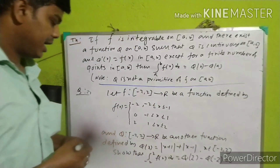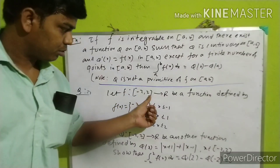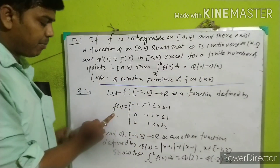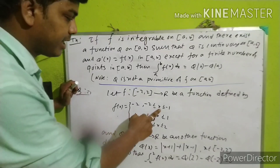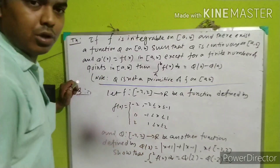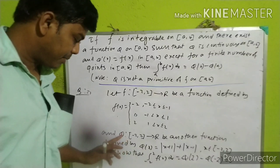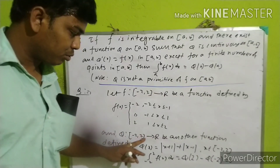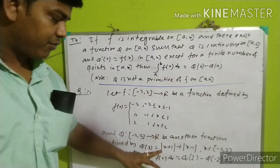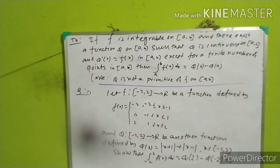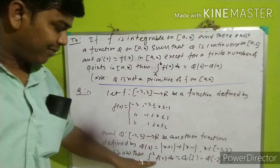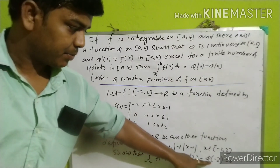Here the question is: a function f such that minus 2 to 2, f from [-2, 2] to R be a function. The function f of x is defined as phi of x equals mod of x plus 1 plus mod of x minus 1, where x belongs to [-2, 2], such that the integral from -2 to 2 of f of x dx equals phi of 2 minus phi of minus 2.